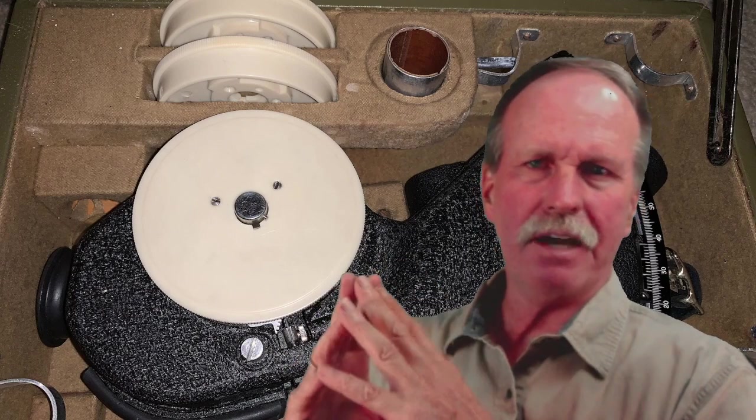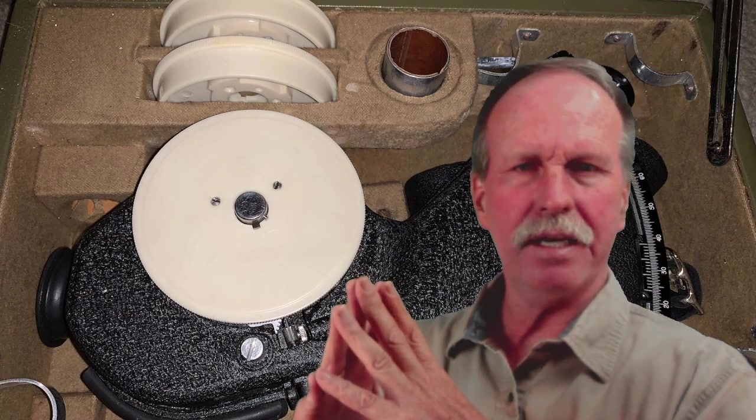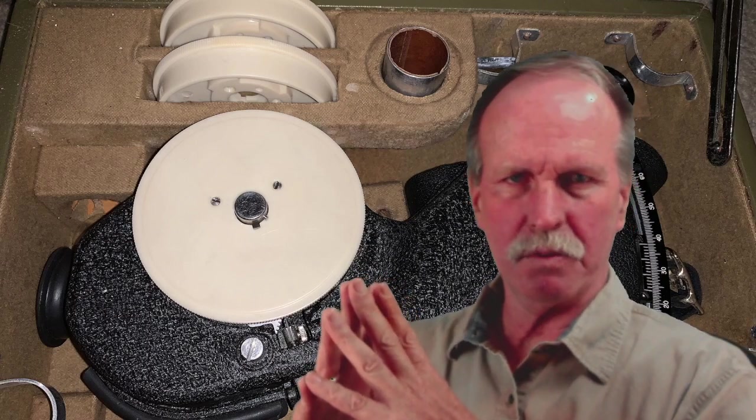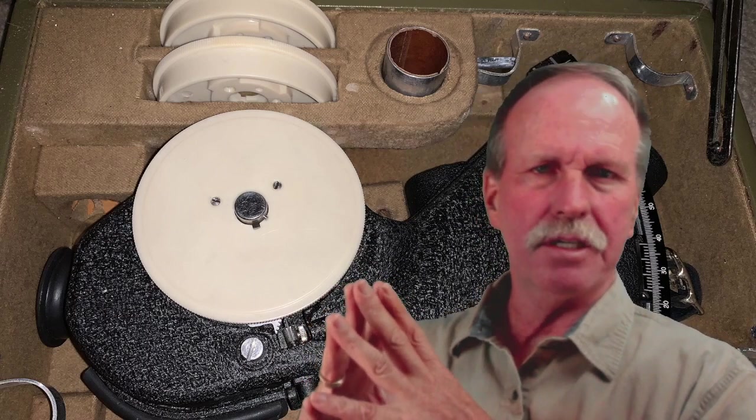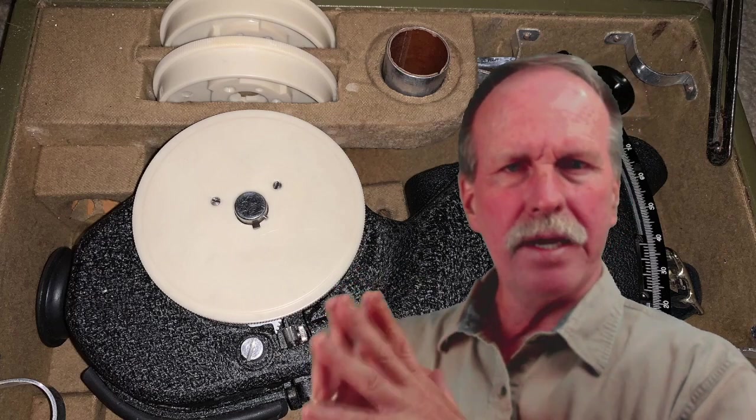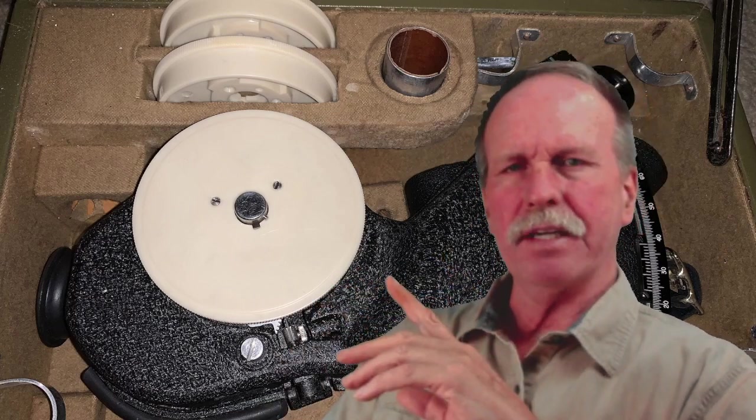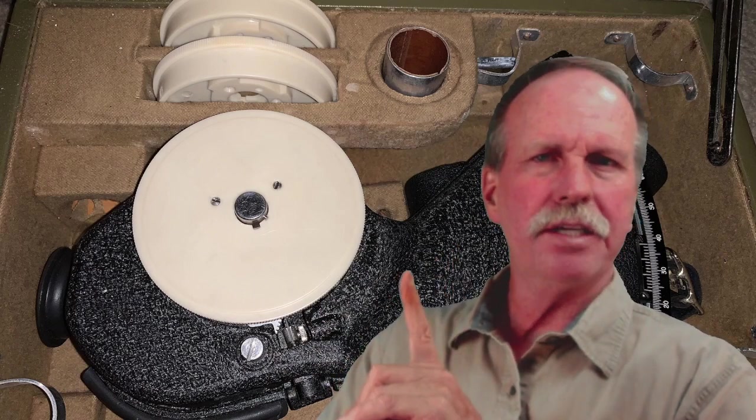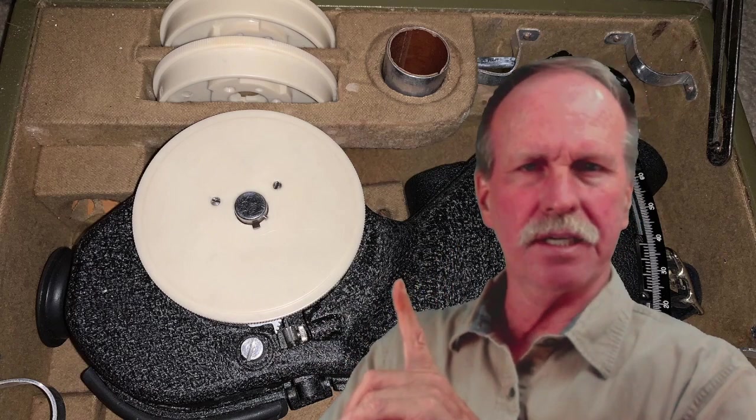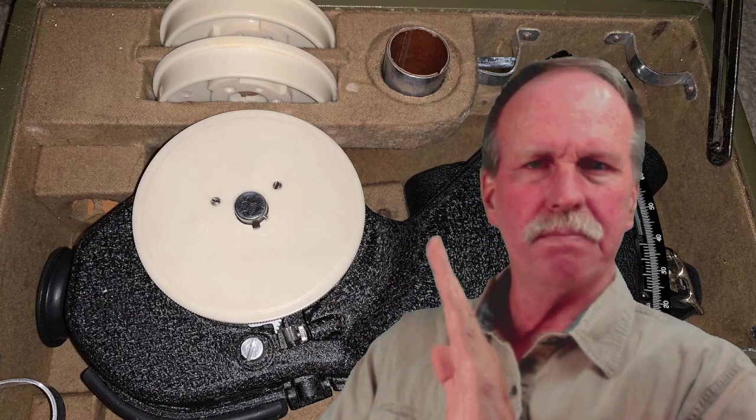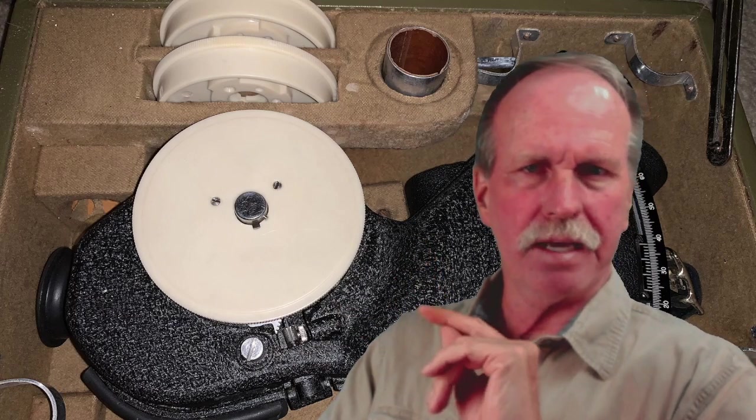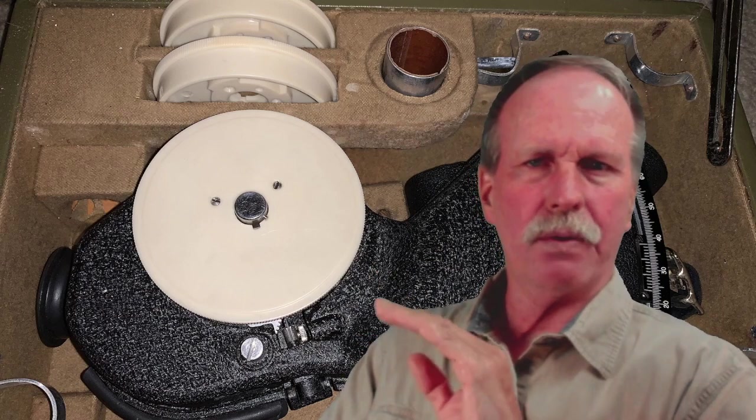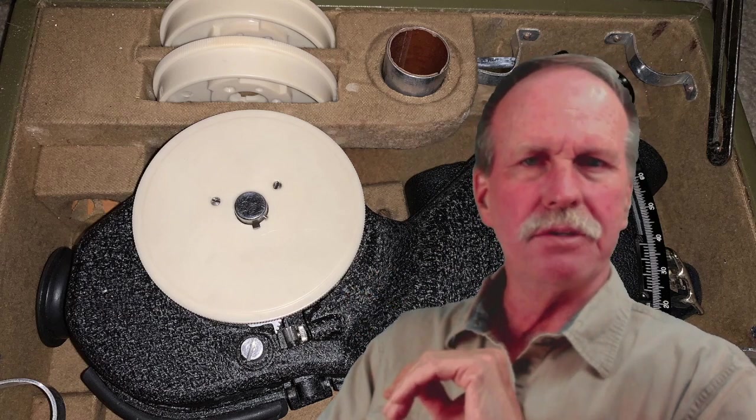In the background here, we have a bubble sextant. This is a Link A-12 aviation sextant from World War II. I use it to do three-star fixes. The way that it works is that gravity affects a bubble in a chamber and creates a vertical within the sextant. Then the angle to the star is measured in relationship to that vertical. You don't need a horizon. That's why it was used in aircraft.